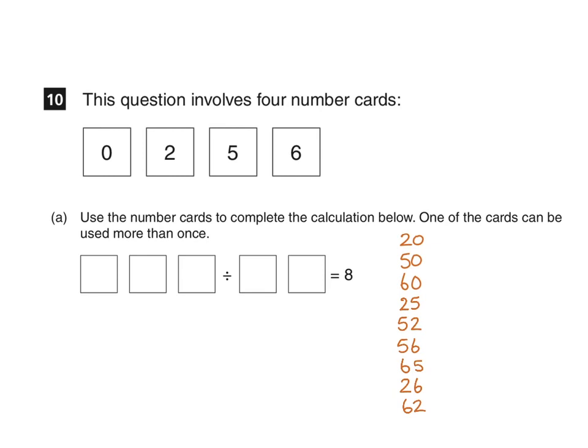Now we can multiply each of those numbers by 8 and see what three-digit number we generate. 20 multiplied by 8 is 160, 50 multiplied by 8 is 400, 60 multiplied by 8 is 480.